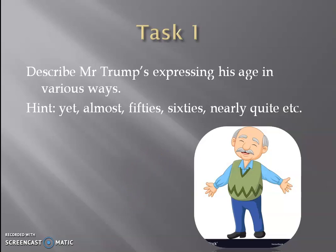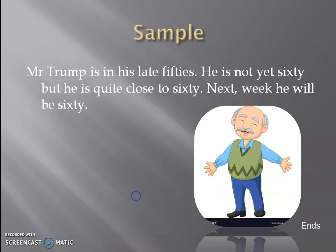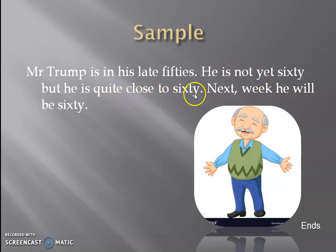A few sample answers have been given. Let us see what we can recall and recollect from our lesson today. Mr. Trump is in his late 50s — late 50s means he has crossed 55 and is between 55 and 59. He is not yet 60, meaning he has not turned 60. But he is quite close to 60 — he might be 59. Next week he will be 60, meaning he is just about to turn 60.